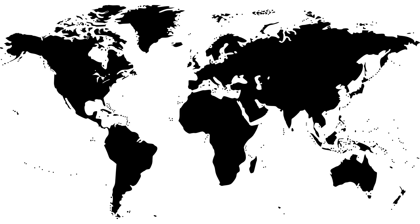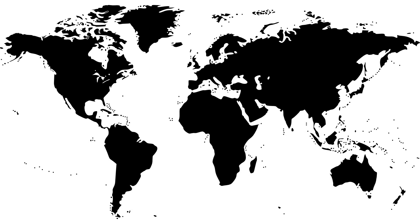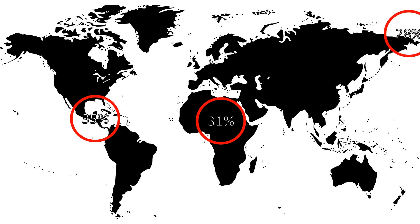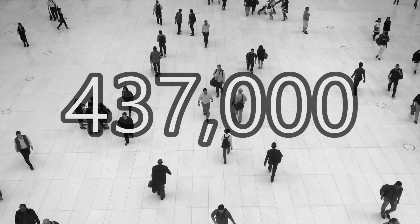One of the deadliest organisms to humans living today is an organism that you encounter every single day of your life. The latest data shows that this organism has killed 437,000 individuals in 2013, and these deaths were not only in one location — they were all over the globe. What is this organism? It's you. Not you specifically, but the species you belong to. Humans have murdered 437,000 individuals in 2013.